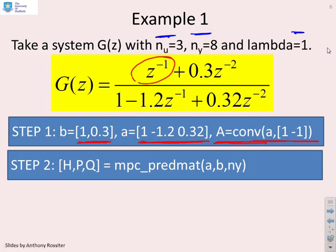Second step, find the prediction matrices. So we've got a piece of code which is called MPC_PREDMAT. Find the prediction matrices. And you'll see you put into it your A polynomial, your B polynomial, and your horizon. And it comes out with the H matrix, the P matrix, and the Q matrix.